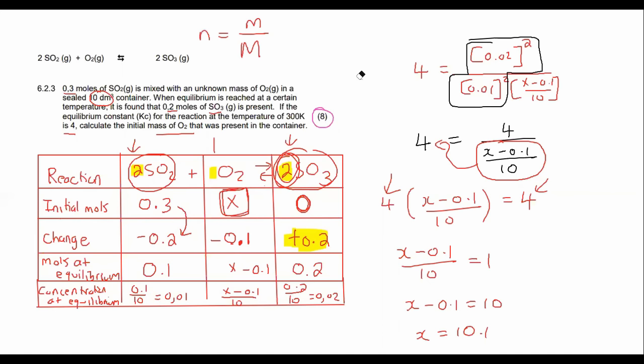And we know that the number of moles is 10.1 moles, the mass we have no idea, and then the molar mass of oxygen on the periodic table is going to be 16 × 2 which is 32. And so if you had to go work out the original mass of oxygen it should be 323.2 grams.